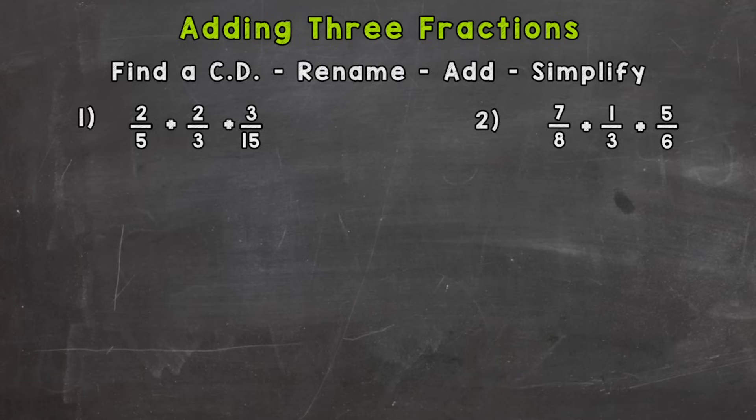So let's jump right into number one here where we have two-fifths plus two-thirds plus three-fifteenths. Now if we have a common denominator you can add right away but here we have a 5, 3 and 15. So obviously we don't have the same number at the bottom of each of those fractions so we need to find a common denominator and the way you do that we need to list the multiples of 5, 3 and 15 and find the least common multiple and that's going to be our least common denominator.